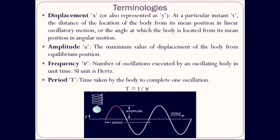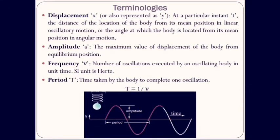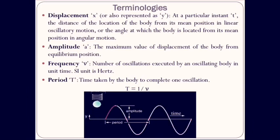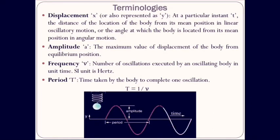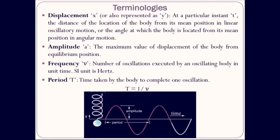Some of the terminologies we are discussing now are going to be used again and again in the coming topics. Starting with the first terminology: displacement. Displacement is, at a particular instant of time t, the distance of the location of the body from its mean position in case of linear oscillatory motion, or the angle at which the body is located from its mean position in angular motion.